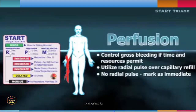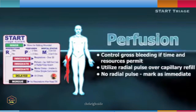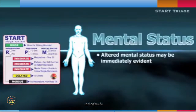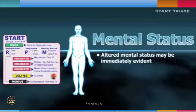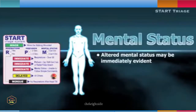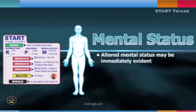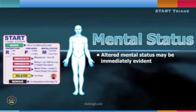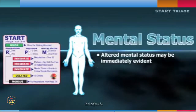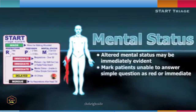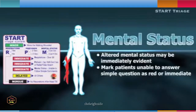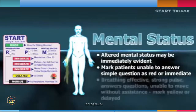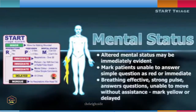If the patient has a radial pulse, the triage team member should next evaluate the patient's mental status. Once the triage team member has determined that the patient is breathing and perfusing, they can turn their attention to the patient's mental status. Many times the patient with an altered mental status will be evident at the start of the assessment. Patients who are confused and cannot answer simple questions should be tagged immediate or red without any further evaluation.